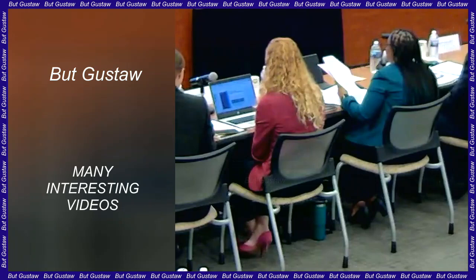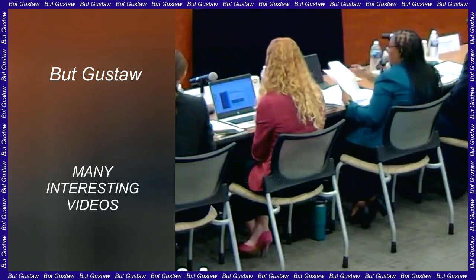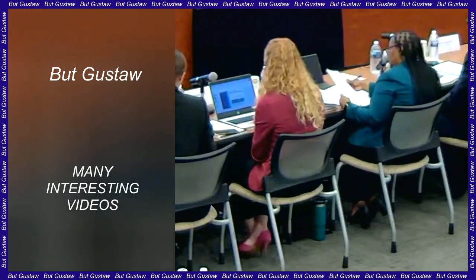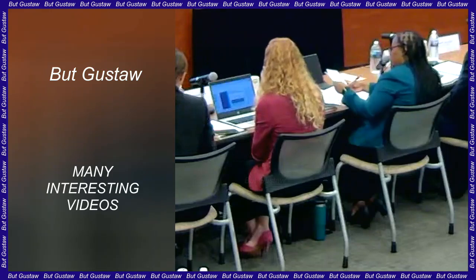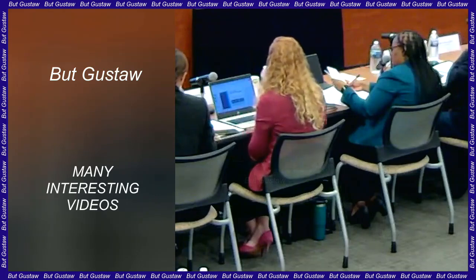The U2OS cell line is derived from human osteosarcoma, also referred to as a bone-derivative sarcoma. It is a group of primary malignancies and a rare cancer that affects mainly young people. It also occurs in animals.